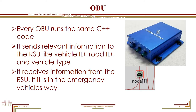As mentioned before, every OBU runs the same C++ code. We use three main pieces of information needed to identify the emergency vehicle and turn the lights green: the vehicle ID, which is unique for every vehicle; the road ID, which tells the road where the vehicle is located; and the vehicle type, which tells us the exact type of vehicle — in our case, either default or emergency. The RSU sends back a message to the OBU, but only tells the vehicle if it is in the path of the emergency vehicle and to go faster and not hold up traffic.